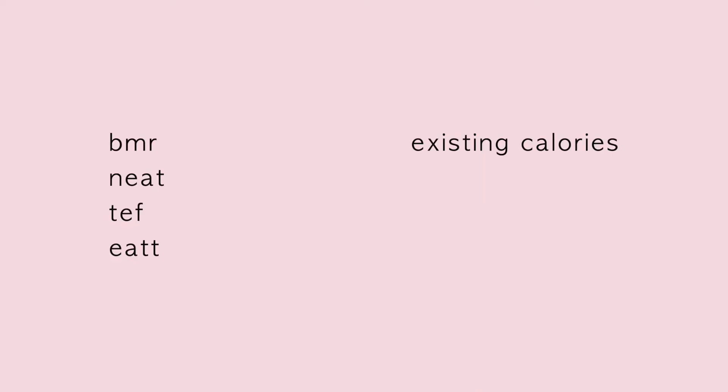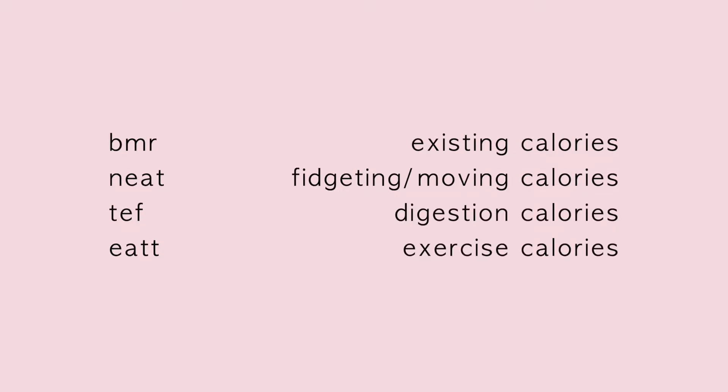Finally, the smallest portion of the pie is Exercise Activity Thermogenesis — the calories you burn during exercise. That is the smallest part of the metabolism pie chart, which is why your exercise should never just be about burning calories; it's literally the worst way to burn calories. So to recap: BMR, NEAT, TEF, and EAT — your existing calories, fidgeting and movement calories, digestion calories, and exercise calories.